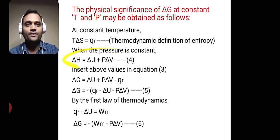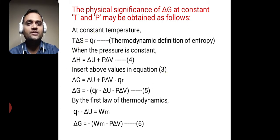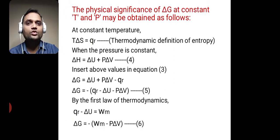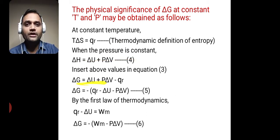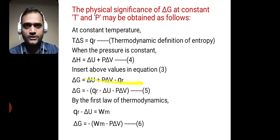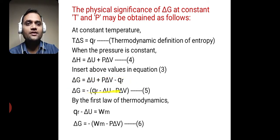We put these two values — delta H and T delta S — into equation 3. We get delta G is equal to delta U plus P delta V minus Qr. Now we rearrange this equation: delta G is equal to negative of (Qr minus delta U minus P delta V).